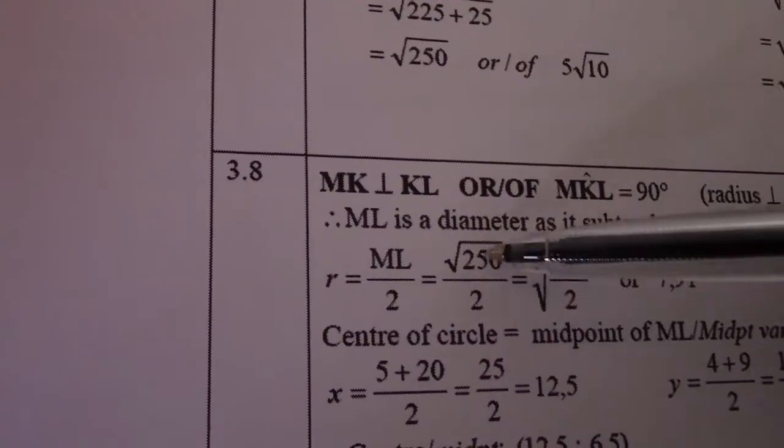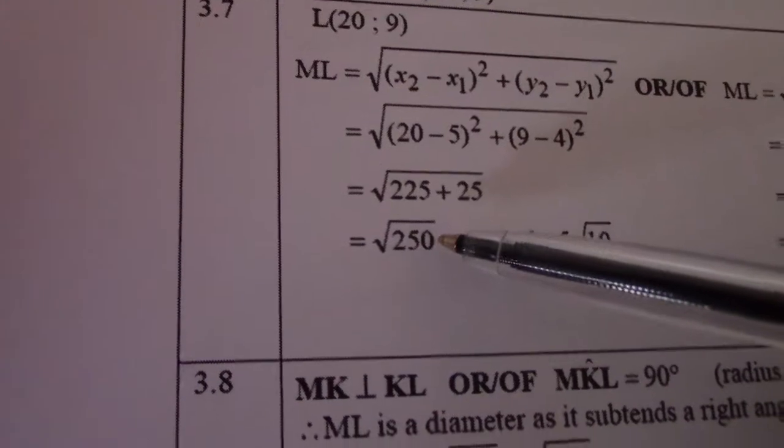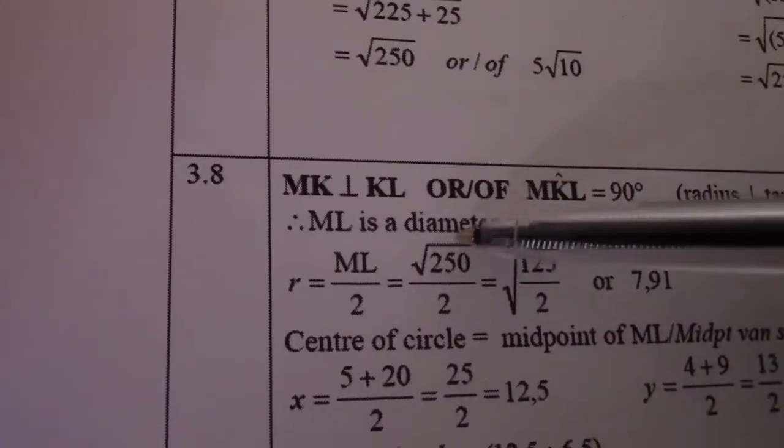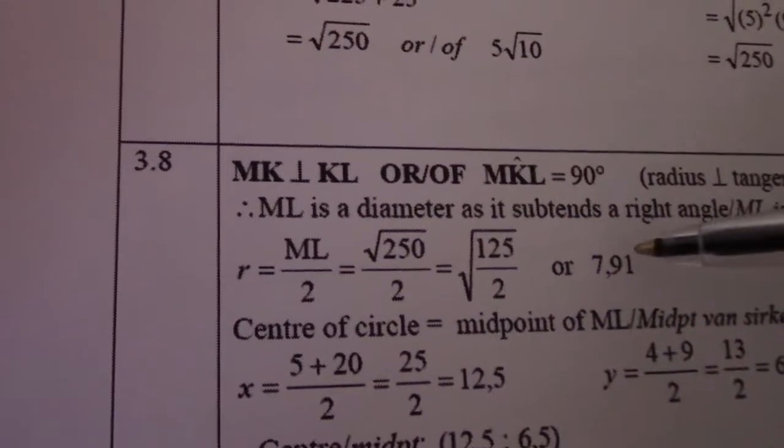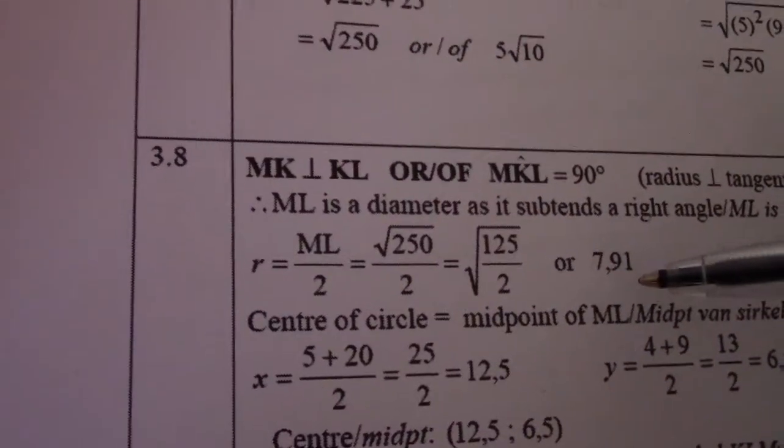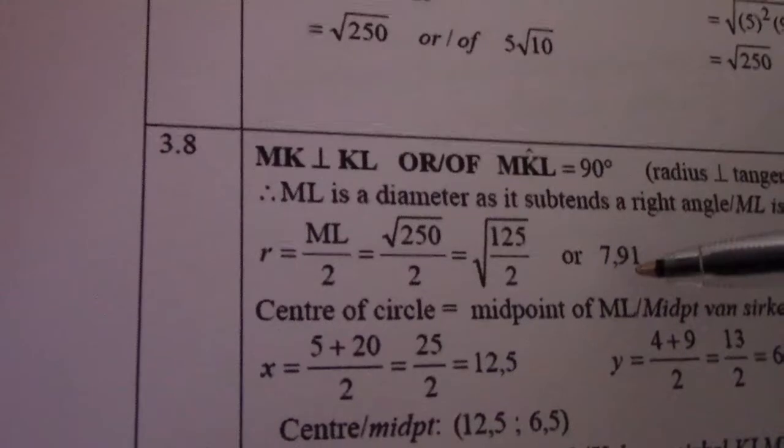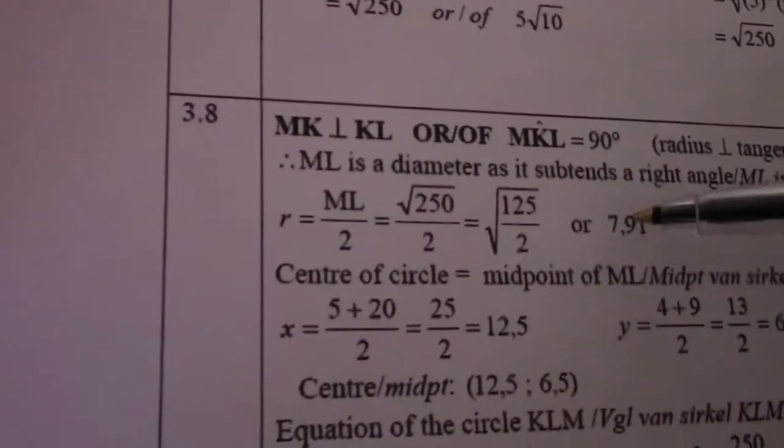So r is ML divided by 2. Remember in the previous problem we solved ML as square root 250. So square root 250 divided by 2 gives me square root 125 over 2, which is 7.91. So my radius is 7.91. Remember I'll have to square it.